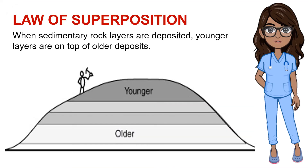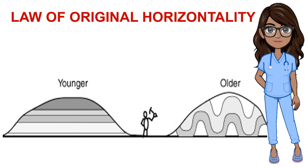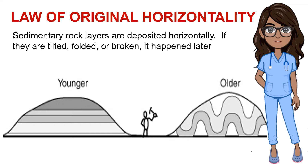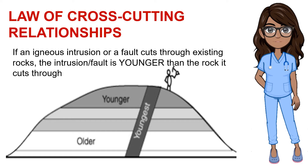Let's recall the stratigraphic laws applicable in relative dating. Law of superposition: when sedimentary rock layers are deposited, younger layers are on top of older deposits. Law of original horizontality: sedimentary rock layers are deposited horizontally; if they are tilted, folded, or broken, it happened later. Law of cross-cutting relationships: if an igneous intrusion or a fault cuts through existing rocks, the intrusion or fault is younger than the rock it cuts through.